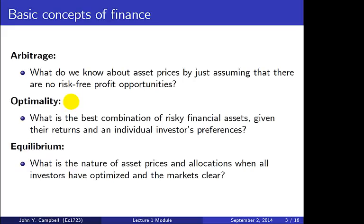At the third level, equilibrium asks what is the nature of asset prices and allocations when all investors are optimized and markets clear — in other words, when investors come together and trade financial assets, what does the resulting equilibrium look like? Optimality and equilibrium are basic concepts of microeconomics. Arbitrage is more specific to finance, and so we're going to begin with that.